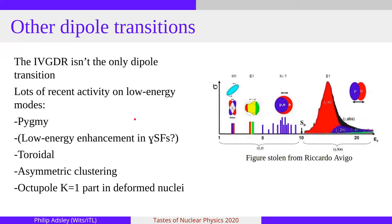In recent years, there's been a lot of activity on these other dipole modes, where there's octopole deformation in quadrupole-deformed systems, which results in low-lying one-minus states, the pygmy dipole resonance, the low-energy enhancement scissor resonances. And in this case, I'm going to concentrate on toroidal, the prediction of toroidal modes in nuclei and on asymmetric clustering.